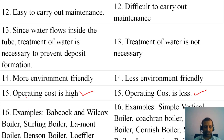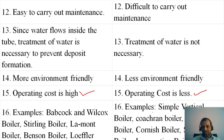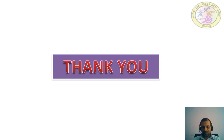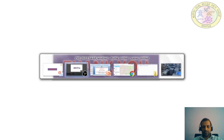Examples of water tube boilers are the Babcock and Wilcox Boiler, Stirling Boiler, Lamont Boiler, Benson Boiler, and Loffler Boiler. Examples of fire tube boilers are the Simple Vertical Boiler, Cochrane Boiler, Langsher Boiler, Cornish Boiler, and Scotch Boiler. This is the end of session 3.